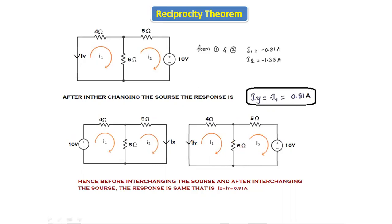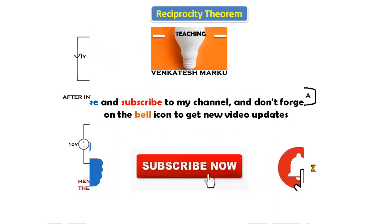The response value is 0.81 amperes in both cases. Hence, the reciprocity theorem is verified. To summarize: first, find the response before interchanging the source; then interchange the source and check the response. If both responses are equal — as verified here using KVL — the reciprocity theorem is confirmed. Thank you.